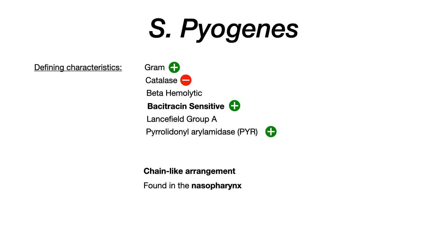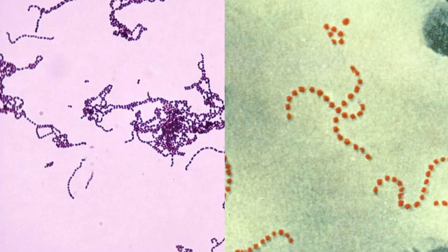Strep pyogenes features a chain-like growth pattern or chain-like arrangement — not unique to Strep pyogenes but a buzzword you should know. It's found in the nasopharynx, which is why it's highly associated with pharyngitis. If a test writer gives you an image of Strep pyogenes, you'll see that chain-like arrangement of the cocci organism.